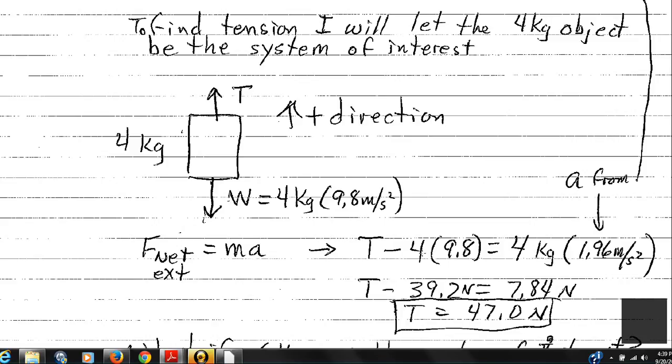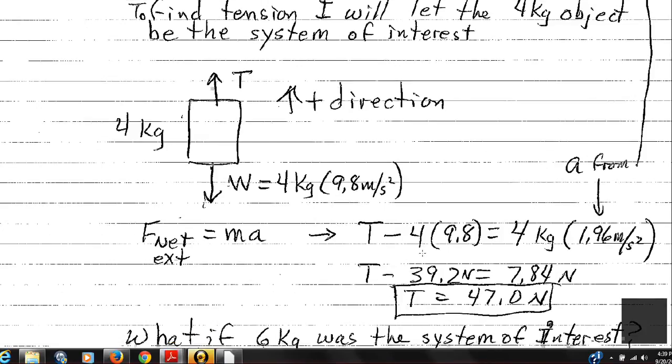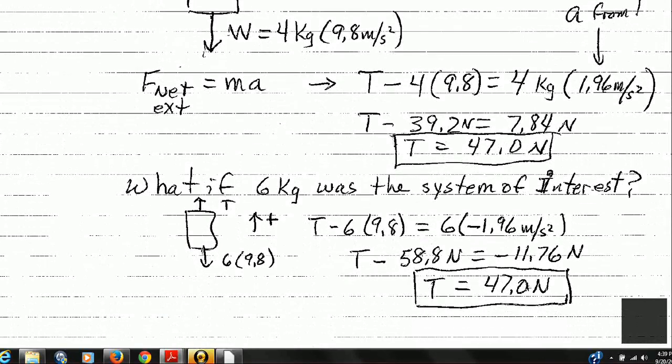Well, I just chose the four kilogram object. What would happen if we selected the six kilogram object as our object of interest? So this is now the right side of the pulley. The six kilogram object has a weight downward, has a tension upward.